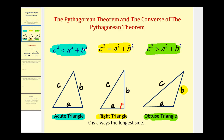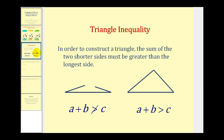Before we look at some examples, we need to talk about something called the triangle inequality. When we're given the length of three segments, it's not always possible to form a triangle. In order to construct a triangle, the sum of the two shorter sides must be greater than the longest side. If the sum of a and b is not greater than c, these two sides could not reach each other and therefore could not form a triangle. So we always want to make sure that a plus b is greater than c.